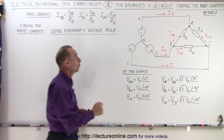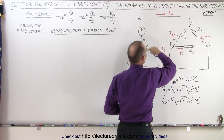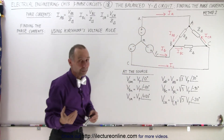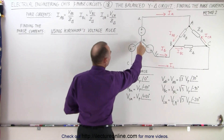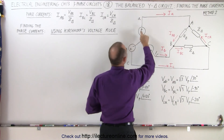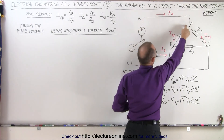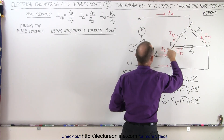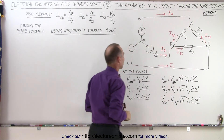What we're going to do is travel around the three loops, add up all the voltages, and from that we should be able to determine the currents. We're going to start at the neutral point right here and go from N to A, from A to capital A, from A to capital B, and from capital B to little b and back to N.